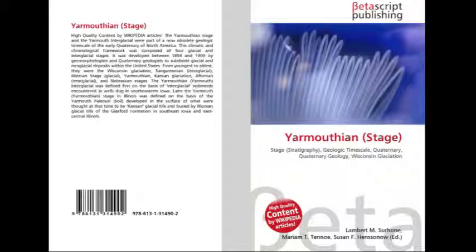Also, the interglacial deposits used by Leverett to originally define the Yarmouthian Yarmouth Interglacial in 1898 actually consist of interbedded glacial tills, diamictins, peats, sands, and silts that are part of the Kellerville till member of the Glasford Formation. Pollen samples and wood recovered from these deposits indicate that the vegetation consisted of a spruce-fir forest and that climate was full glacial rather than interglacial during their accumulation. Thus, the criteria — that is, (1) its sediments being all of the same age, (2) it consisting of sediments deposited during a single interglacial period, and (3) as originally defined by Leverett in 1898 consisting of interglacial sediments — by which the Yarmouthian Yarmouth Interglacial stage was defined and recognized have all been found to be false.